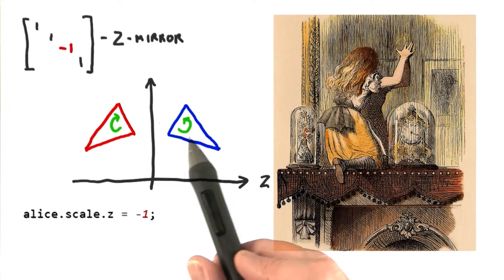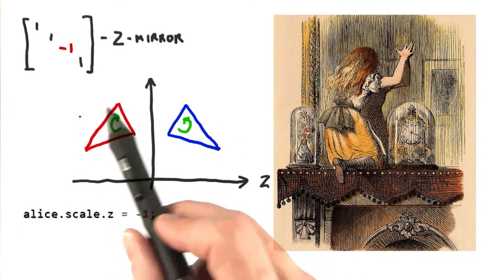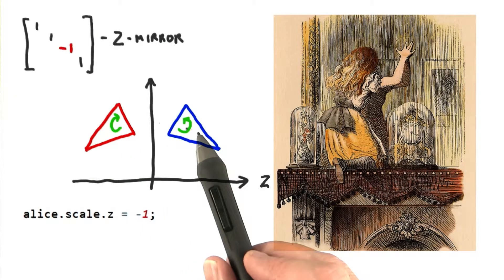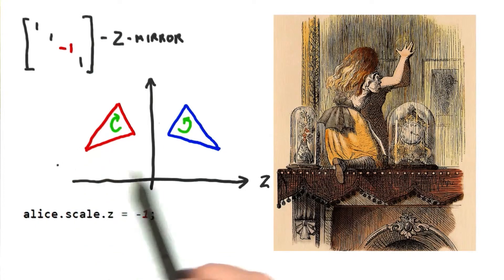One major problem with the mirroring matrix is that it not only flips the triangle, it also flips the sense of the triangle. Using a mirroring matrix converts from a right-handed coordinate system to a left-handed one, or vice versa.